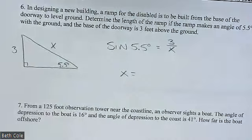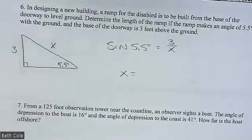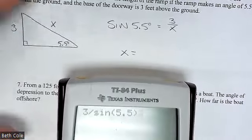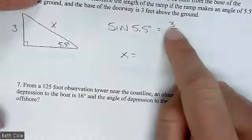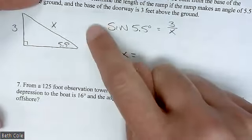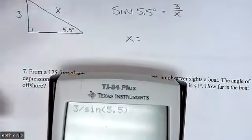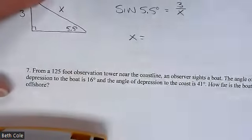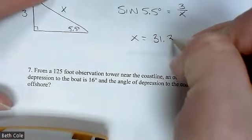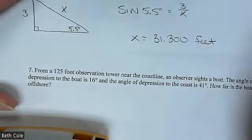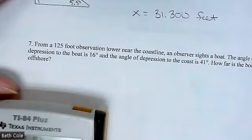Go ahead and type that. When your variable is in the denominator, you divide — so it's 3 divided by sine of 5.5. Mathematically, you multiply the X over, then divide the sine value over. I got 31.300 feet. The units were feet from the problem, so make sure you include that.